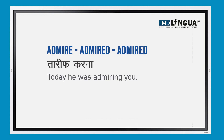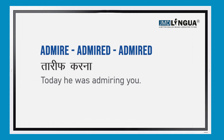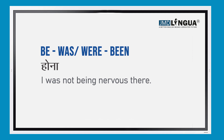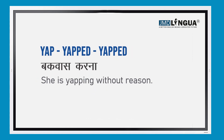Next verb is 'admire' — the meaning of admire is 'tarif karna'. For example: today he was admiring you. Next verb is 'be' — the meaning of be is 'hona'. For example: I was not being nervous there.